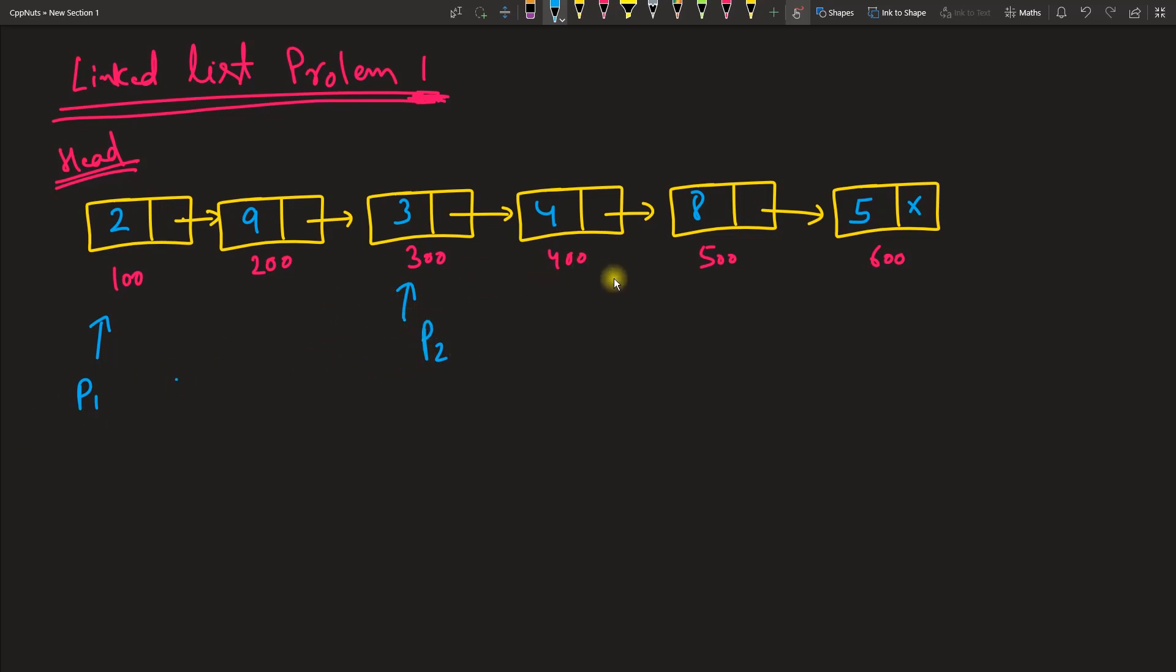Magically, when this p2 reaches the end—let's suppose p2 is here—p1 would have reached this guy. And I asked for three from the back, right? So this is the third one from the back.